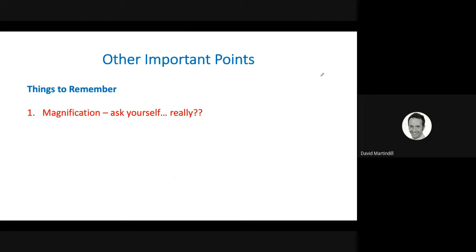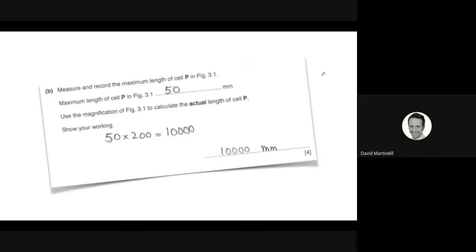Other important points. Make sure that if you're asked to do a magnification calculation, review your answer. It's quite common for students to do this type of thing and tell the examiner that the actual length of a cell is 10 meters. Have a look at that and you'll see that that is a ridiculous answer. What they should have done is divided 50 by 200.